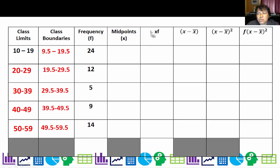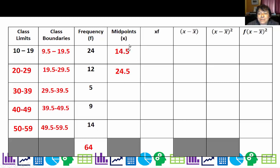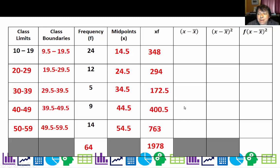Now I have my frequencies. I'm going to multiply my frequencies by a number for my class limits. Should I use 10 or 19? 10 is probably too low, 19 too high — a good compromise is the midpoints. My midpoints are 14.5, 24.5, and so on — notice the difference is the class width again. I find all my midpoints, multiply them by their frequencies, and add them up. To find the mean, I divide that sum by the total frequency and get 30.91. So the mean age of people playing Pokémon, based on my made-up data, is about 31.